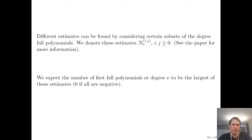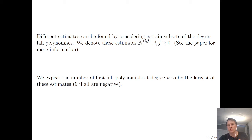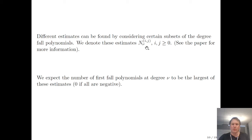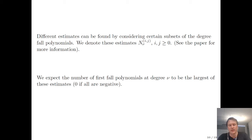This is not the only estimate we can consider. Up to now we assumed all original degree-fall polynomials play a part, but we can also have an estimate where we consider only certain subsets of them. The benefit is that we don't have to remove everything from the modifier ideal, only certain sub-ideals. Sometimes that is a good trade-off. At each degree you get a finite number of these estimates, and we take the largest one as our expected count of degree-fall polynomials. If all estimates are negative, we expect none.